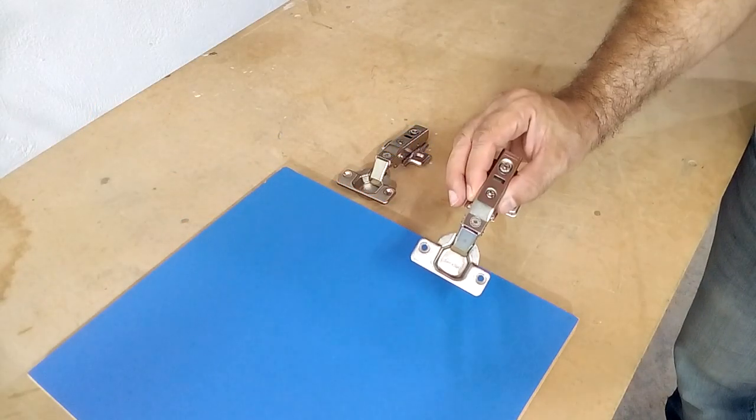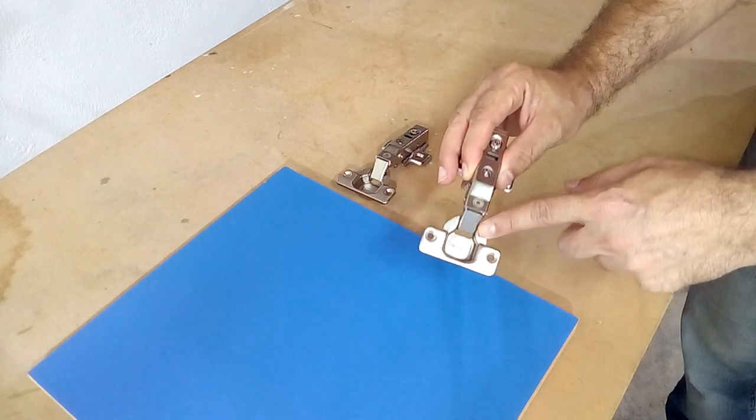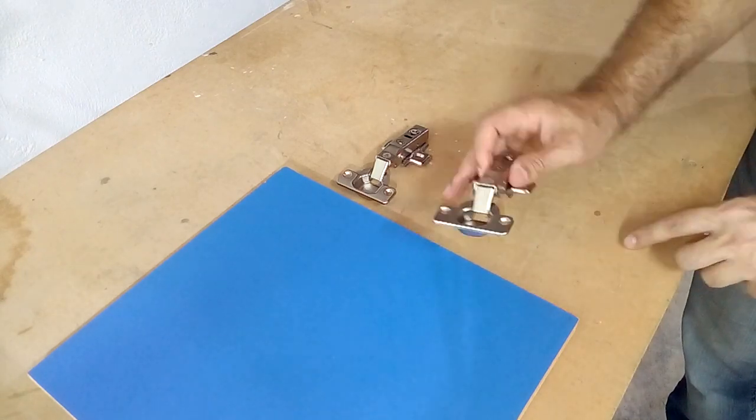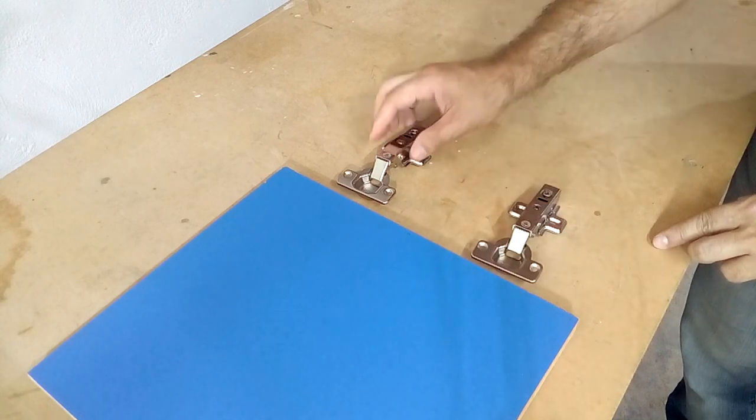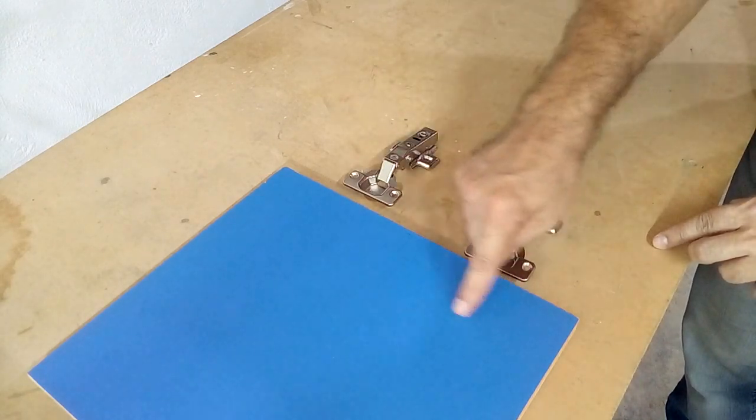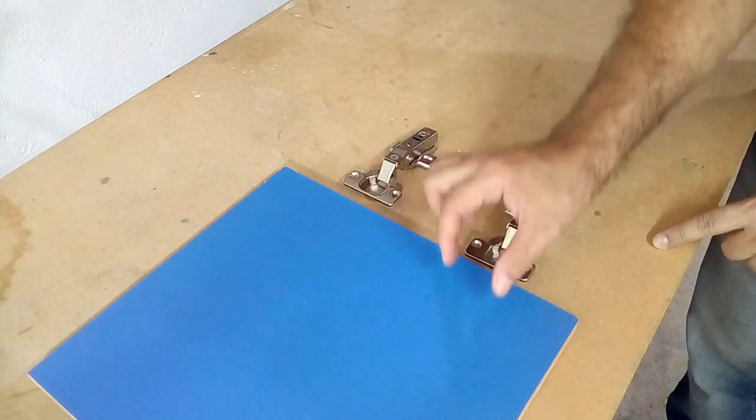When we make furniture, it is very common to use 35mm scope hinges. To install this type of hinge, we have to make a hole in the door that allows it to be held correctly.